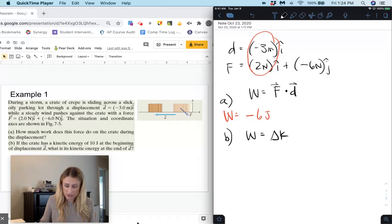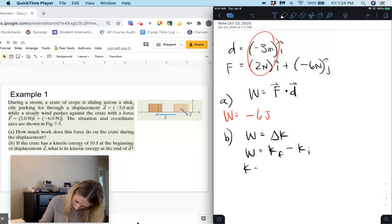So I know change in kinetic energy, that's kinetic energy final minus kinetic energy initial. So I'm solving for kinetic energy final here. So I get work plus kinetic energy initial.